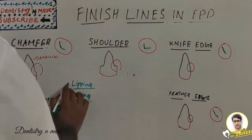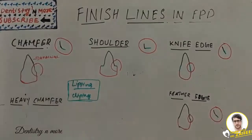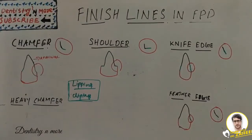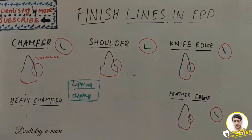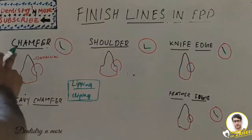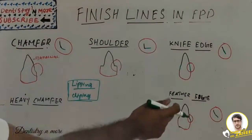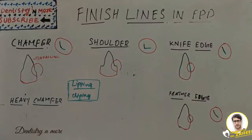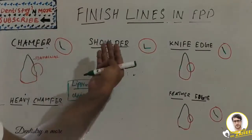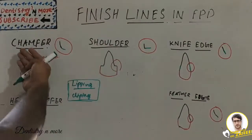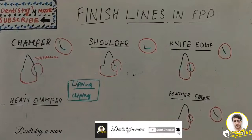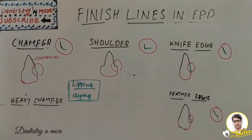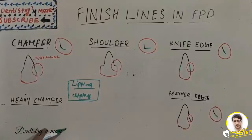Now let's look at the various finish line designs. The first one is chamfer, then we have shoulder, knife edge, feather edge, and modifications including radial shoulder and heavy chamfer. All of these differ in the angulation of the axial wall to the gingival wall.